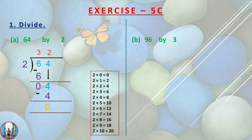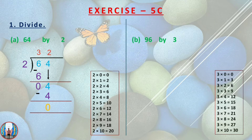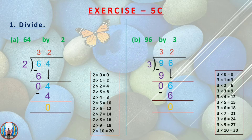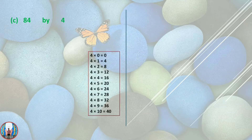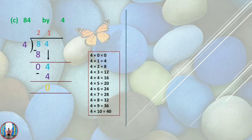Question B: 96 by 3. We write the table of 3 and divide 96 by 3. 3 threes are 9, 9 minus 9 is 0, then bring down the 6. Question C: 84 by 4. We write the table of 4. 4 twos are 8, 8 minus 8 equals 0, then bring down the 4. 4 ones are 4, then 4 minus 4 equals 0.